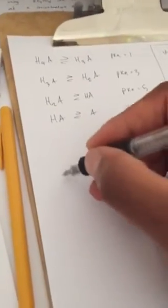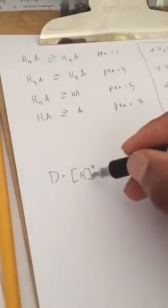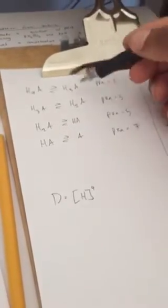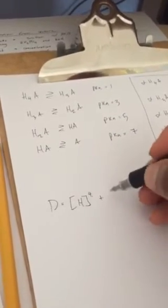So the denominator is essentially going to be the same for each one of these. So you go D equals H to the fourth power, and you start with how many protons you actually started with. So you have four protons that you can lose, so you start the denominator first value as how many protons you can lose.